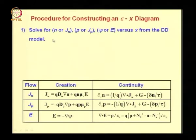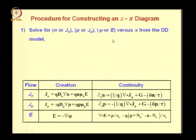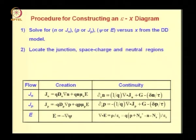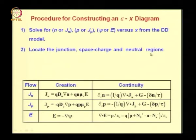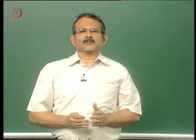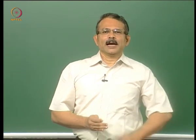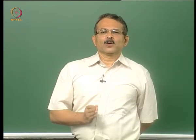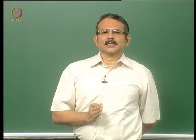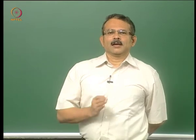The first step is to solve for n, Jn, p, Jp, psi, and E versus x from the drift-diffusion model. The second important step in constructing the Ex diagram is to locate the junction, space charge, and neutral regions within the device. Let us take examples of some devices to illustrate how to locate these various regions and points.